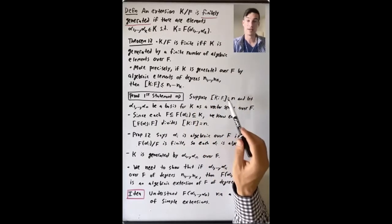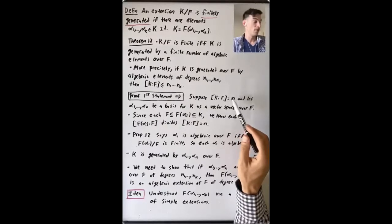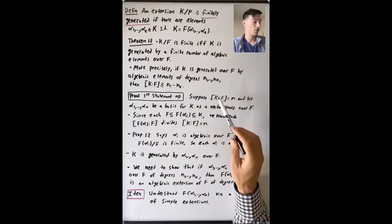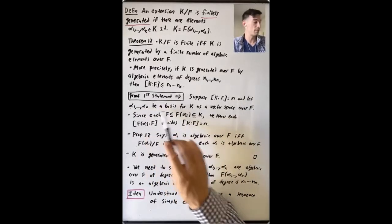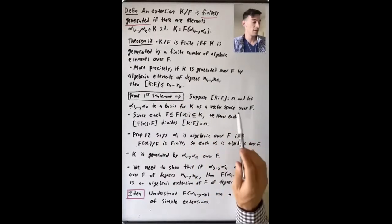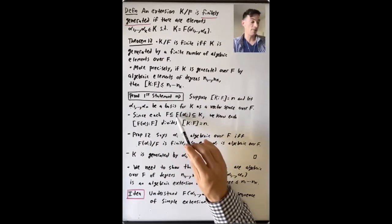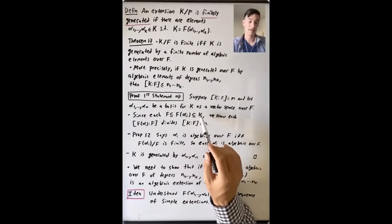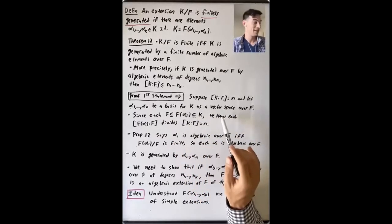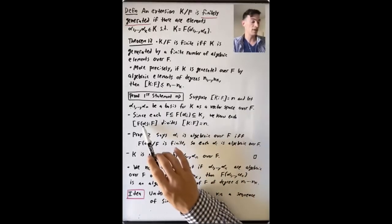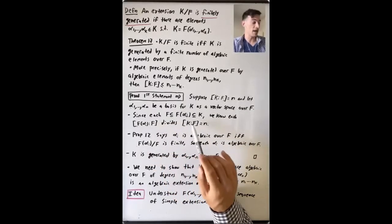Suppose this extension has degree n. If we know this extension is degree n, we can find a basis of n elements of k as a vector space over f. Let's name those elements α₁ through αₙ — this is a basis for k as a vector space over f. Each of the fields generated by αᵢ over f is a subfield of k containing f. By multiplicativity of field extension degrees, the degree of f(αᵢ) over f divides the degree of k over f, which is n.